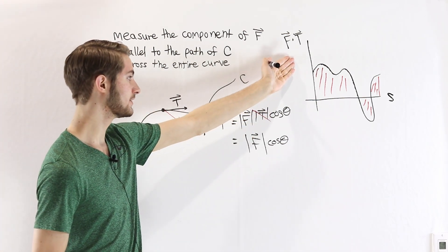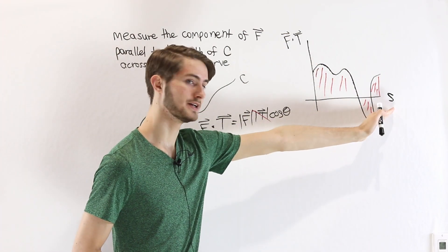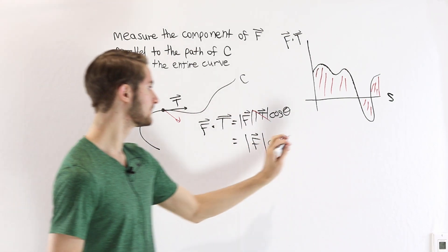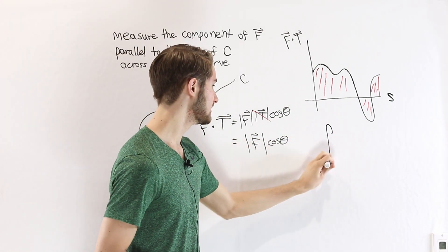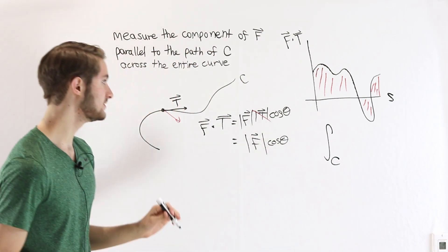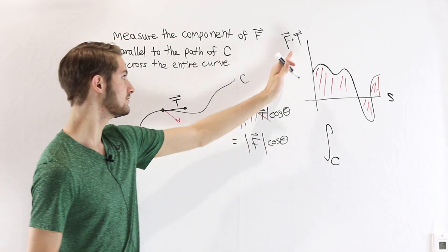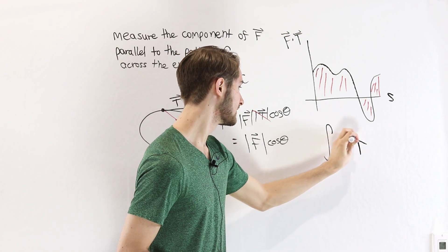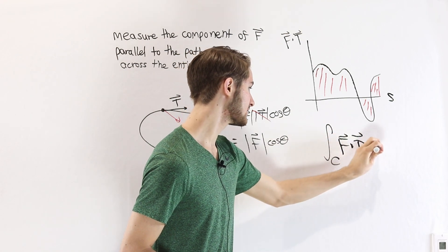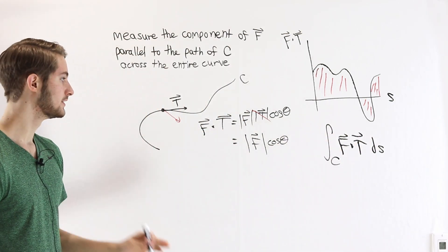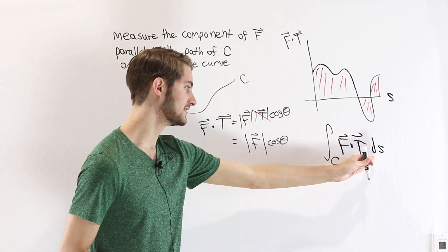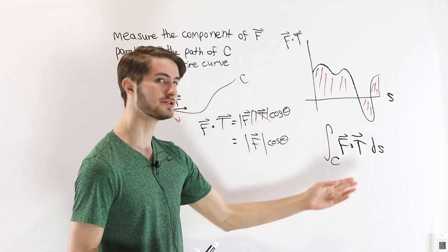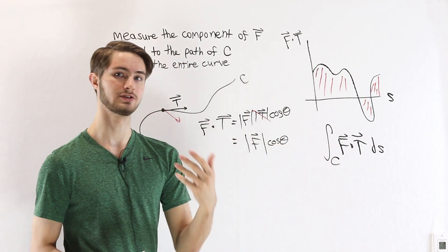In order to compute this — since it's just a numerical value plotted against some variable s — we can do it like we would any integral. We take the integral along this curve c of our function value f dot T with respect to the arc length, so we have the integral of f dot T ds. And this is one way to express the vector field line integral.